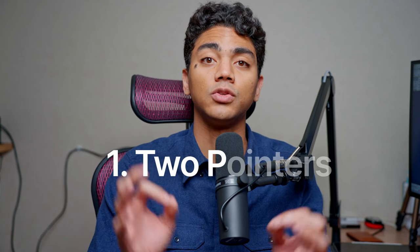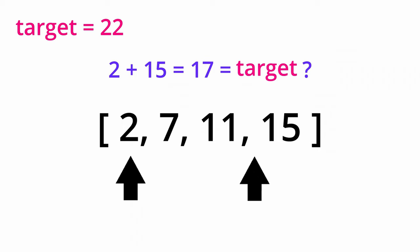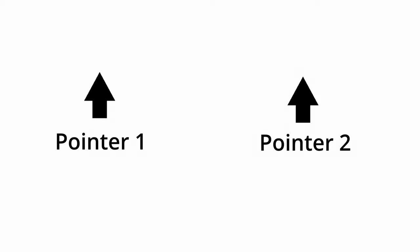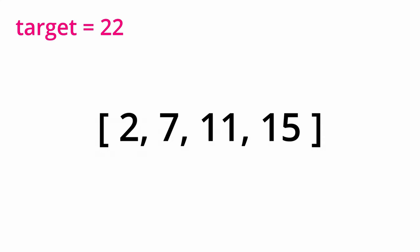Starting with the two pointers algorithm. The two pointers pattern is basically exactly what it sounds like — we're going to make use of two pointers to keep track of two data points simultaneously. Let's imagine that we have an array and a target that is 22, and we want to find the two numbers in this array that add up to the value 22.